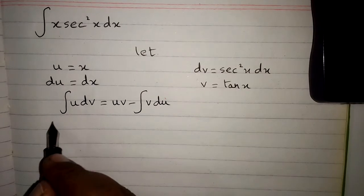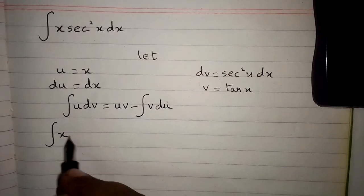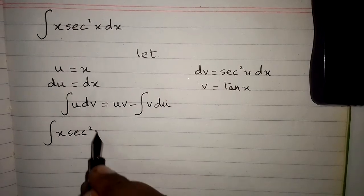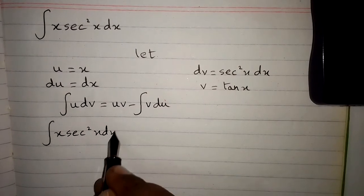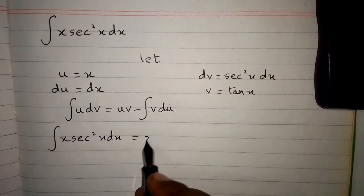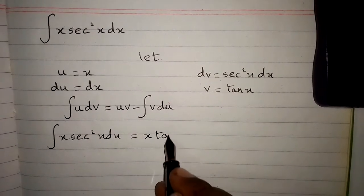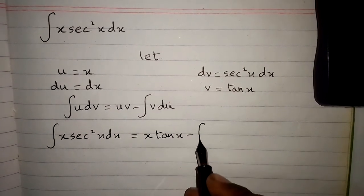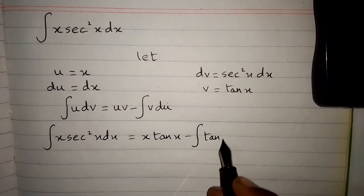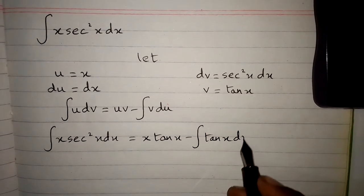Now we put the values in: u is x and dv is sec squared x dx. Then u is x and v is tan x, minus the integral of v, which is tan x, times du, which is dx.